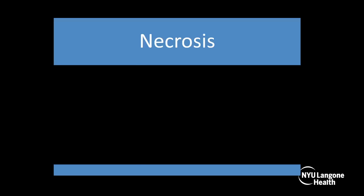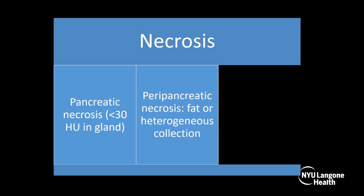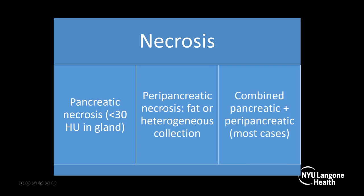Now let's talk a little more about pancreatic necrosis. Dr. Balthasar described pancreatic necrosis as less than 30 Hounsfield units in the pancreas, but there's also peripancreatic necrosis. The pancreas is basically surrounded by fat, so the fat around the pancreas can necrose — you'd see a collection with fat or heterogeneity in it, and that's when you would call it peripancreatic necrosis. You can also get a combination of pancreatic and peripancreatic, which is most common.